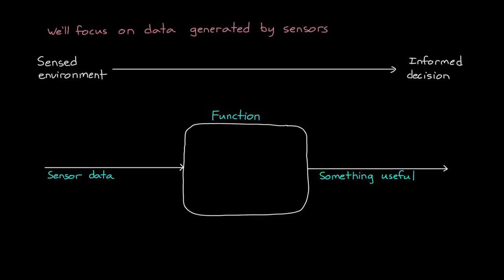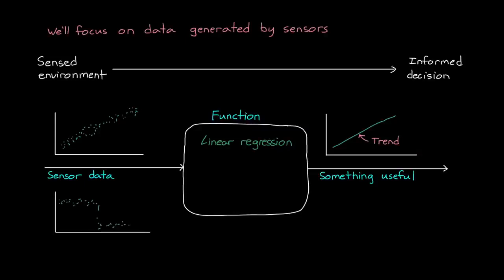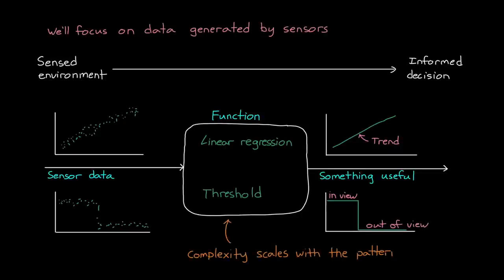And we have tons of methods that we can use to find patterns in sensor data. For two simple examples, we might just run a linear regression to determine how the data is trending over time. Or we may look for when the signal drops below some threshold to indicate that whatever the sensor was observing is no longer in view. But here's the thing I want to point out. The complexity of this algorithm and how difficult it is to develop scales with the complexity of the patterns that you're trying to find and label, as well as how those patterns vary from one observation to another.